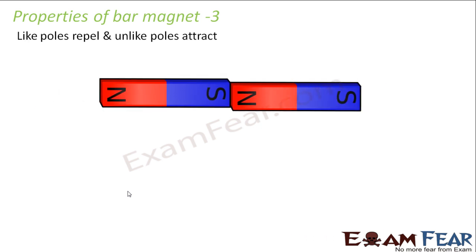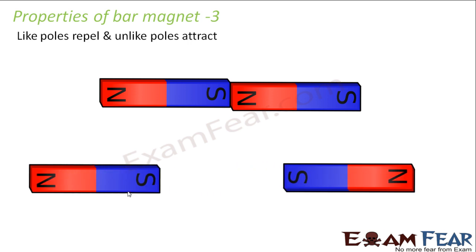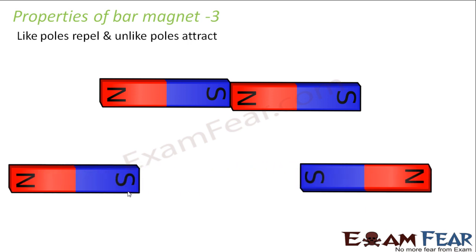The third property is that like poles repel and unlike poles attract each other. If you bring two unlike poles together — for example, a south pole and a north pole — they will attract each other. But if you bring two like poles together, such as north-north or south-south, they will repel each other.